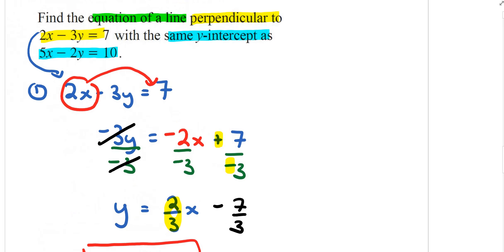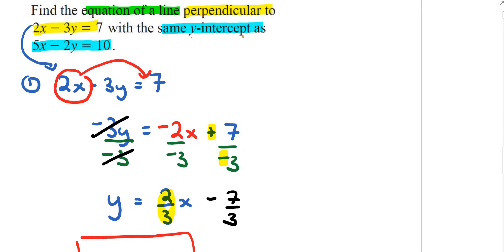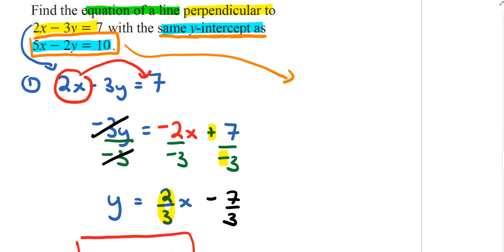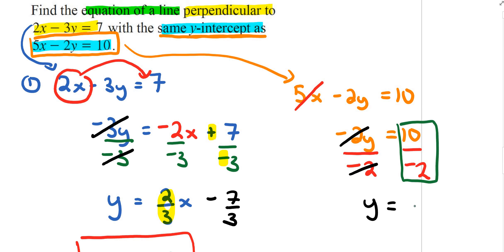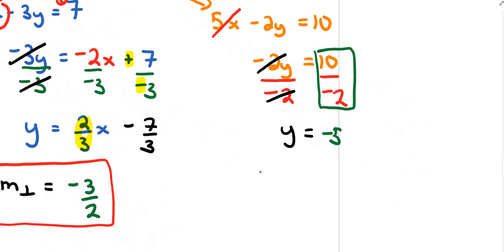Now let's deal with the y-intercept. It has the same y-intercept as another line. For a y-intercept, the x value always goes to 0, so I have negative 2y equals 10. Dividing both sides by negative 2, the negative 2s cancel, giving y equals negative 5. So the y-intercept point is 0 comma negative 5.